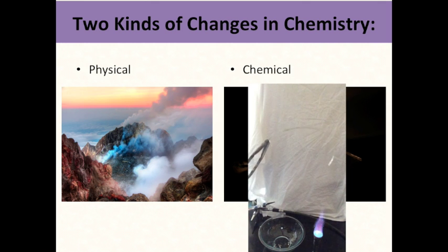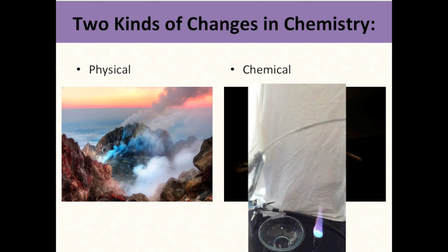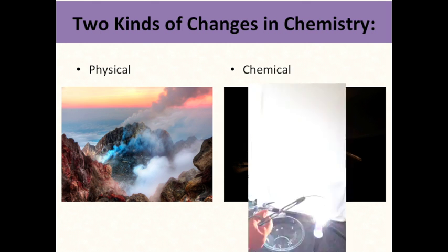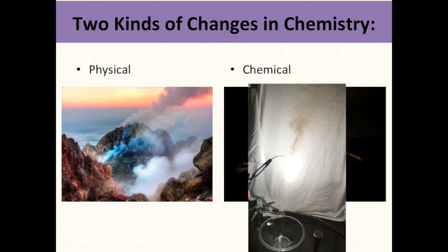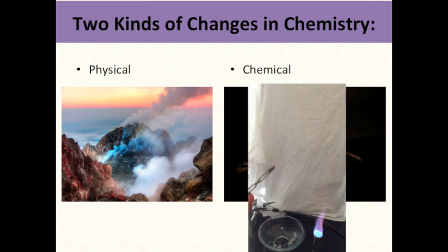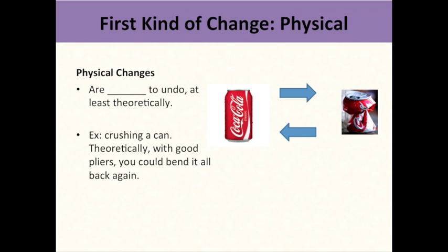There are two kinds of changes in chemistry: physical changes and chemical changes. Here's an example of a volcano undergoing a physical change of state where molten lava is going from liquid to solid and cooling, whereas a magnesium ribbon that is on fire is undergoing a chemical change — burning metal is a chemical change. Physical changes are easy to undo, at least theoretically. If you took a can of Coca-Cola and smashed it, in theory you could re-bend it back again.